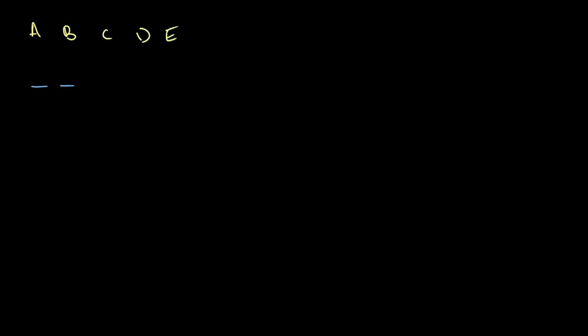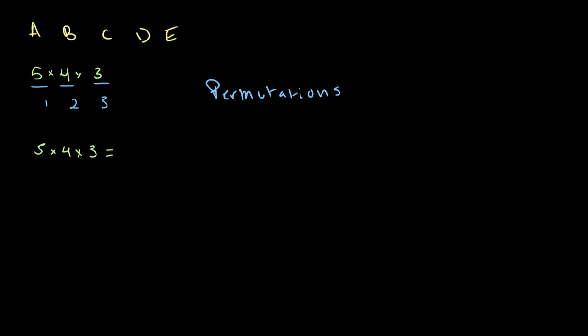In my previous video, I used an example where we had five people — A, B, C, D, and E — and we had three seats: seat 1, seat 2, and seat 3. We had to find the number of different permutations, the number of different possible arrangements in which these people can sit. In the first seat there are five possibilities, for each of those five there are four more, and for each of those four there are three more, giving us five times four times three, which equals sixty permutations or arrangements.